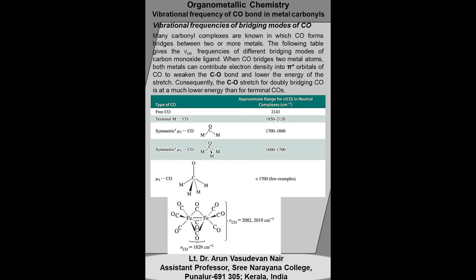Next, we study the vibrational frequency of bridging carbonyl ligands. Many metal complexes are known in which carbon monoxide forms bridges between two or more metals. When carbon monoxide bridges two metal atoms, both metals can contribute electron density to the pi star orbitals of CO, weakening the CO bond and lowering the energy of the CO stretch. Consequently, the CO stretch for a doubly bridging carbonyl ligand is at a much lower energy than that for terminal carbon monoxide ligands.